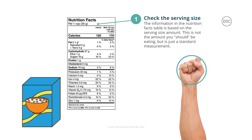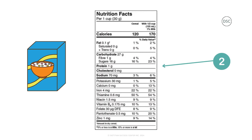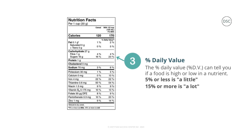Let's run through an example. This is a nutrition facts table from a box of cereal. Step one — check the serving size: for this cereal the serving size is one cup or 30 grams. If you make a fist, that's about the size of one cup. Step two — browse the nutrients: if we eat one cup of this cereal we get 120 calories, 0.1 grams of fat, 27 grams of carbohydrates, 1 gram of fiber, 16 grams of sugar, 1 gram of protein, and so on. On the right side of the table you can also see the nutrition facts if you were to eat this cereal with 125 milliliters of one percent milk.